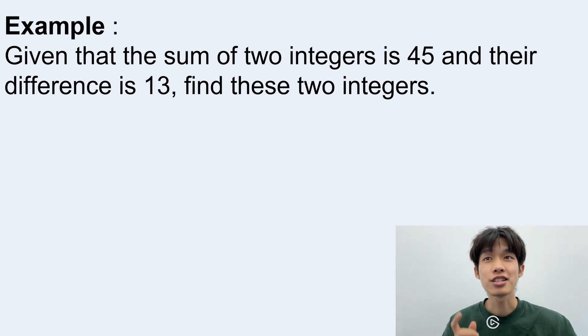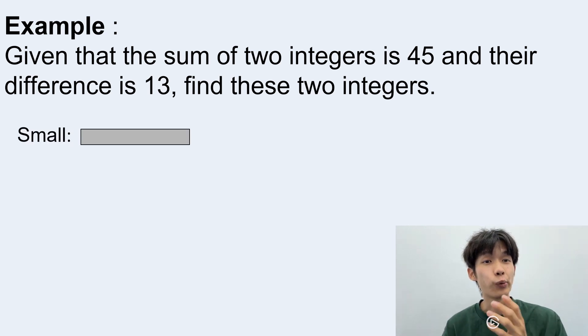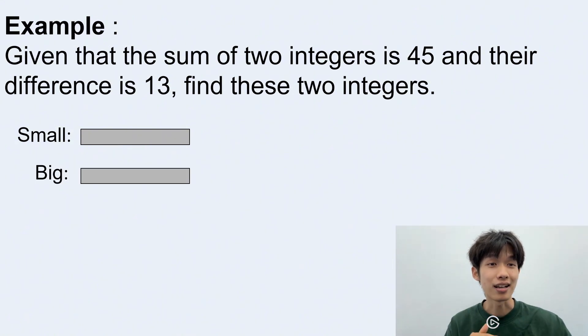Let's start to draw a model for the small number. We have this. And when we are trying to draw a model for the bigger number, how long should we draw? We should draw the same length as the small number first. And then we need to plus 13 because it has 13 more than the small number. And then they have the total sum equals to 45. And here we have already drawn the model.